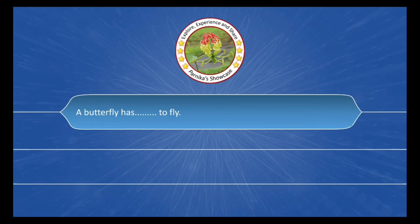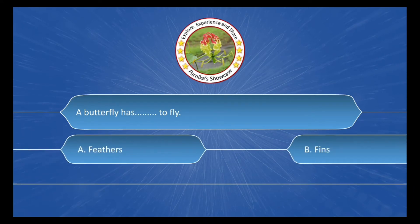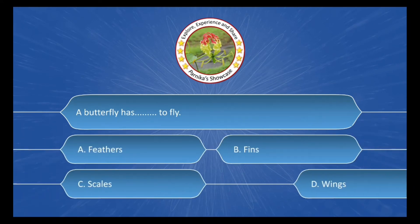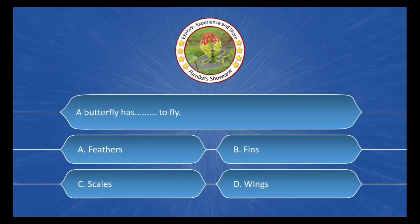Next question is: a butterfly has ___ to fly, and the options are: A. Feathers, B. Fins, C. Scales, D. Wings. And the correct answer is option D. Wings.